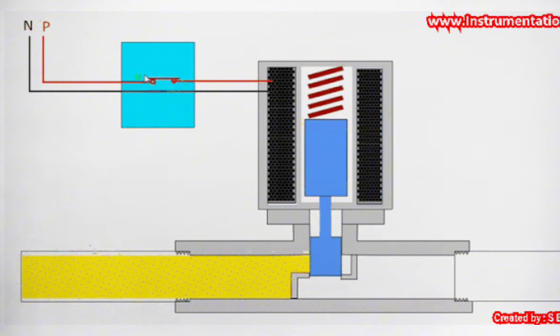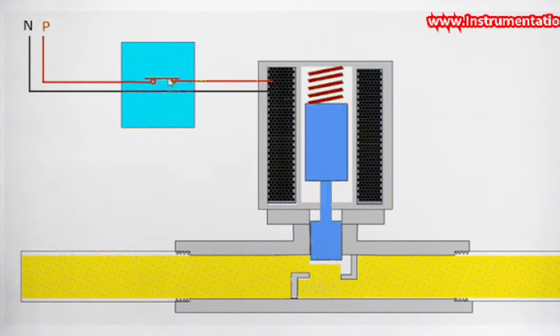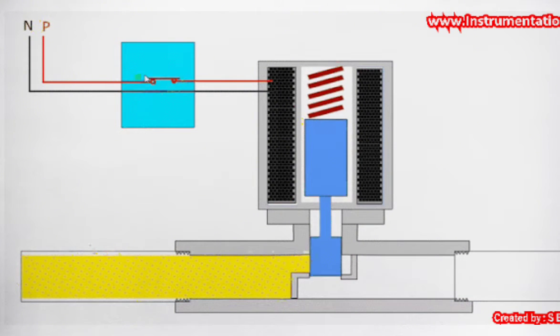In the solenoid valve, check for the vent port healthiness. Many times, the vent port is getting choked due to bugs or if the bug arrestor is not installed or due to dirt. Clean the vent port and bug arrestor if found choked.